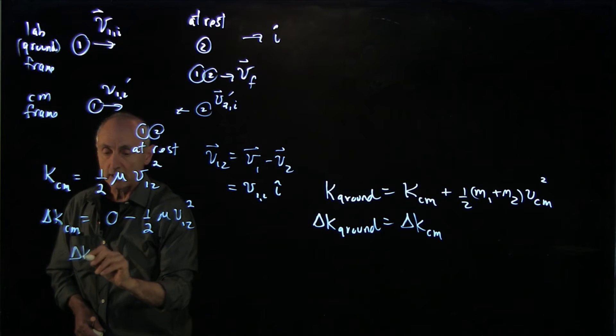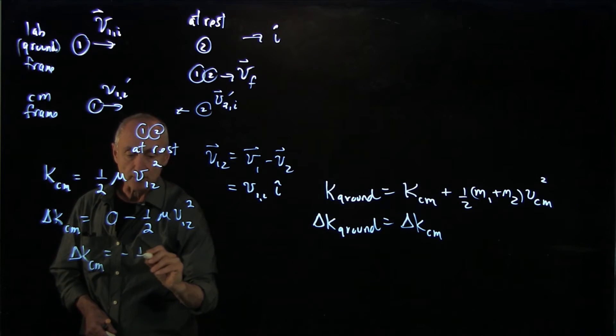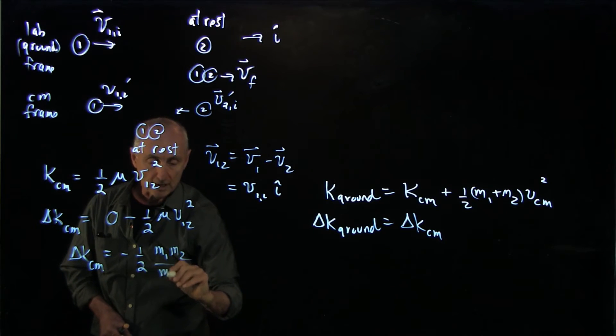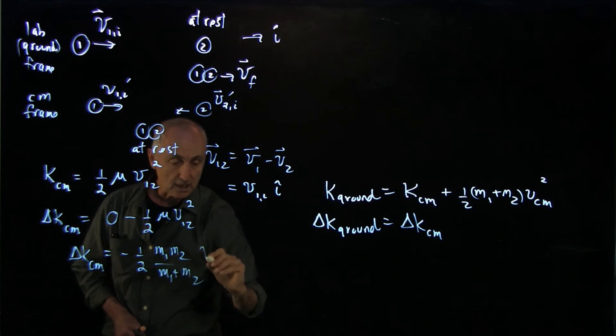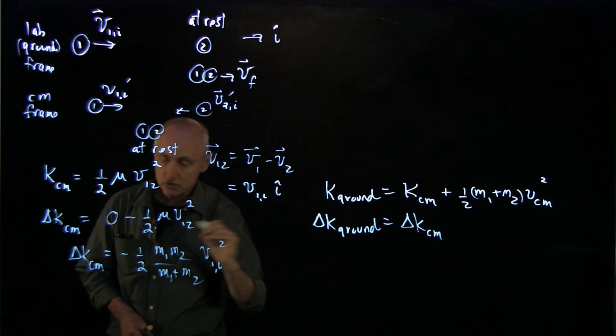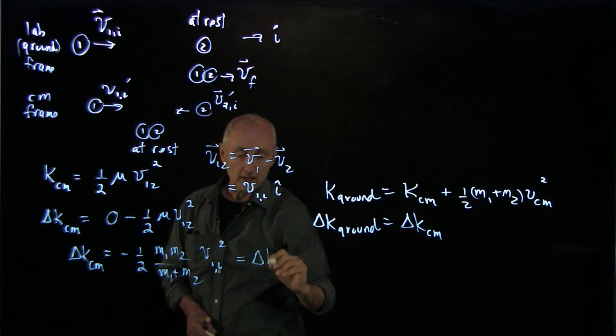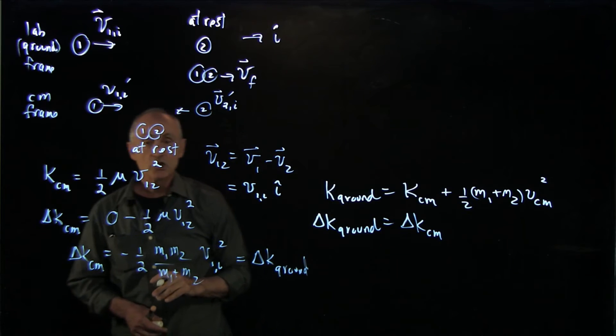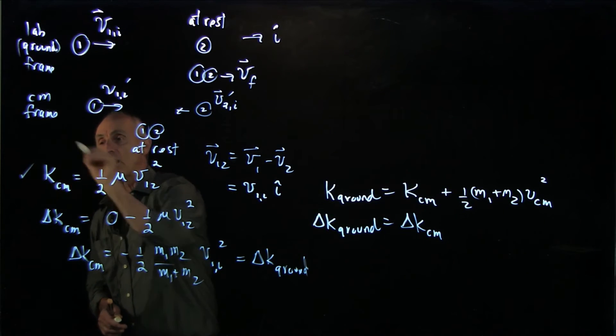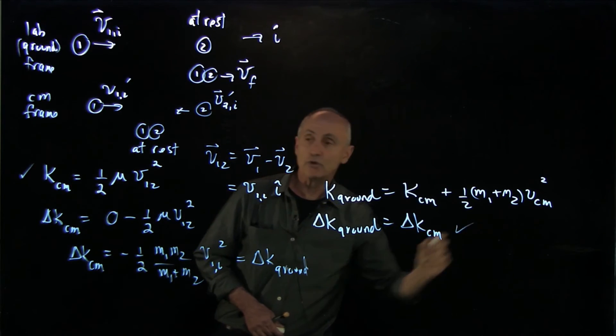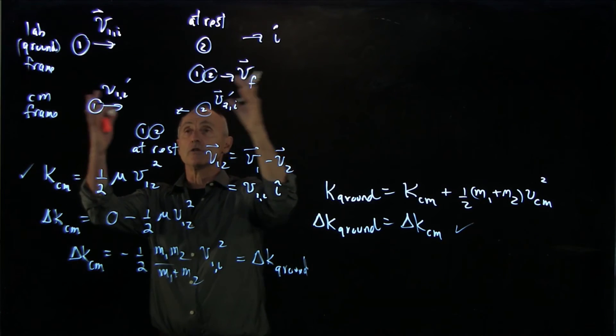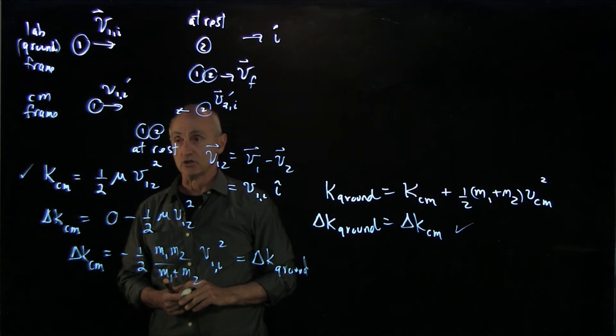Right away, we have that the change in kinetic energy is minus 1 half. Remember, mu was m1 m2 over m1 plus m2 times v1 initial squared. That's the same change in kinetic energy as the ground frame. So by using our result here and our result there, we were able to very quickly assess how much kinetic energy is lost in this inelastic collision.